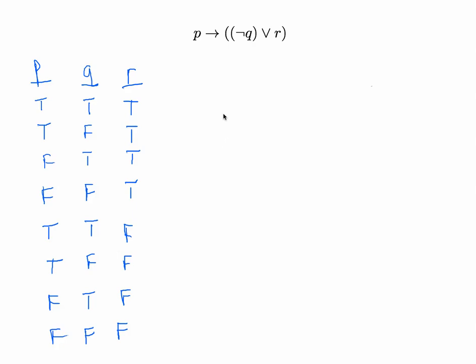Just as in algebra, we're going to build the truth table from the inside out, going into the innermost parentheses first. So let's start with not Q. We'll make a quick column for not Q by looking over at Q — the negation of Q has the opposite truth value. So if Q is true, not Q is false; if Q is false, not Q is true. And so on: false, true, false, true, false, true.